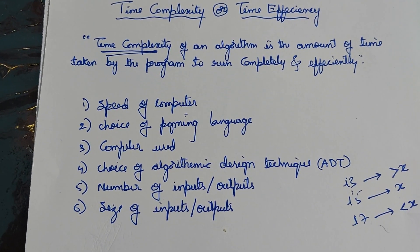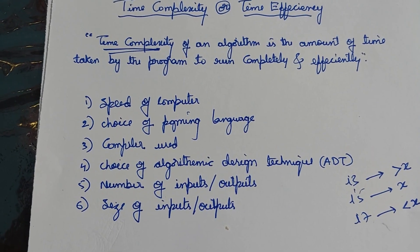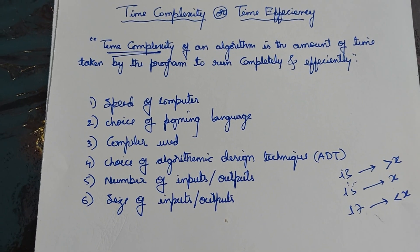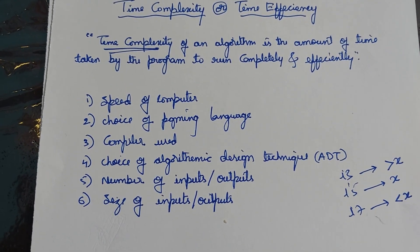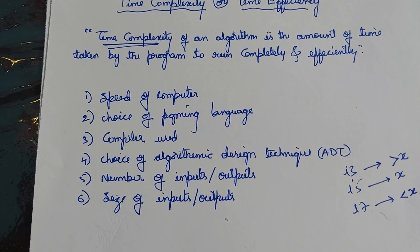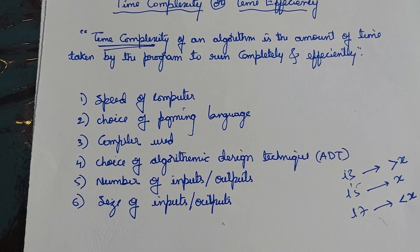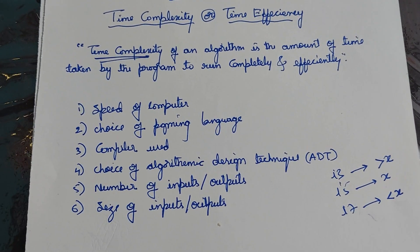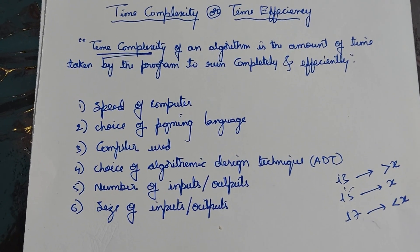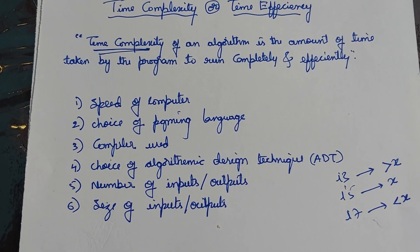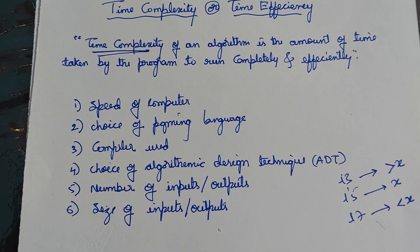The third factor depends on the compiler we are using. Whenever we convert our algorithm written in a high level programming language, it is not understood by our processor. So we need to convert it into machine level language. Depending on the quality of the compiler — if you use a good quality compiler, it will take less time, so the time complexity is less and hence it is efficient. If the compiler itself takes much time to convert, then obviously the algorithm takes more time to give output, but in that case we cannot blame our algorithm.